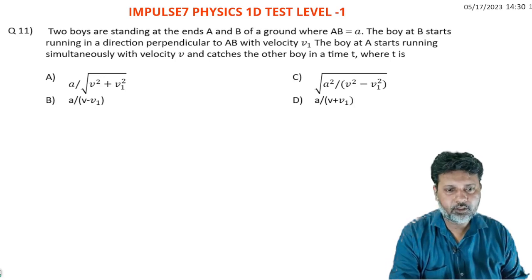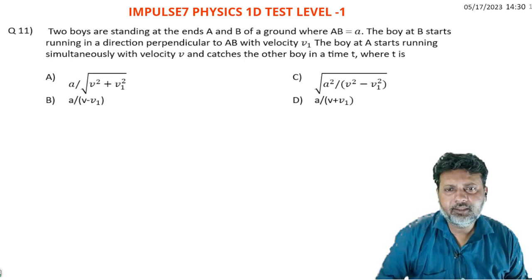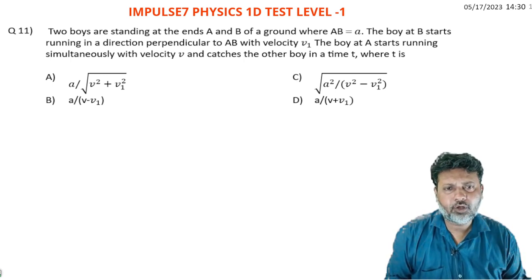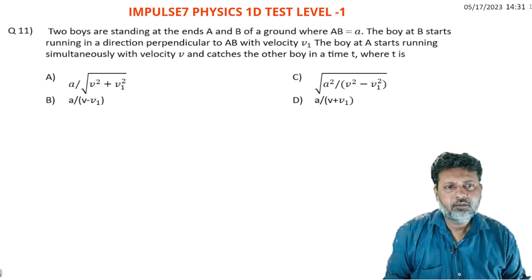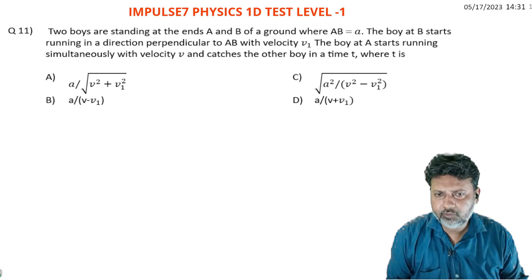Next question - read the question. Two boys are standing at the ends A and B of a ground where AB is equal to a. The boy at B starts running in a direction perpendicular to AB with velocity v1. The boy at A starts running simultaneously with velocity v and catches the other boy in time t, where t is the value we need to find.